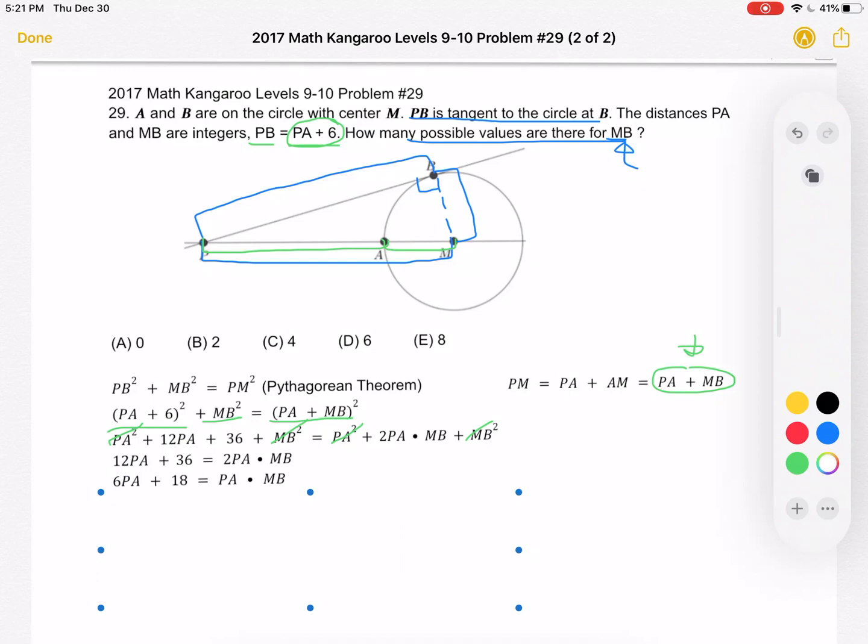Now we can divide by PA on both sides because again we want to find the number of possible values for MB so it would be helpful if we isolated it. And we get that MB is equal to 6 plus 18 over PA.